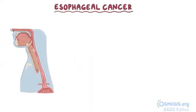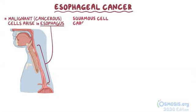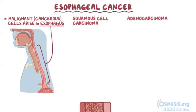Esophageal cancer is when malignant or cancerous cells arise in the esophagus. This cancer can appear in any segment of the esophagus, and it's further classified into squamous cell carcinoma and adenocarcinoma, depending on the type of cells it originates from.